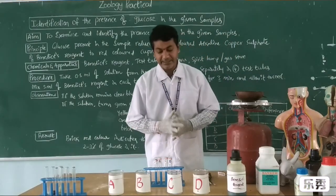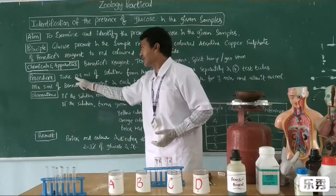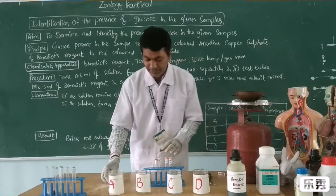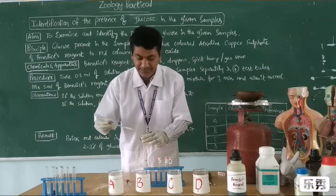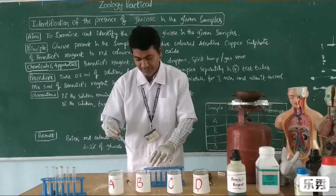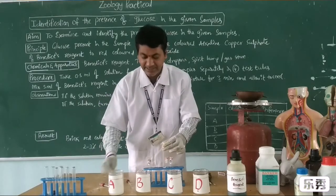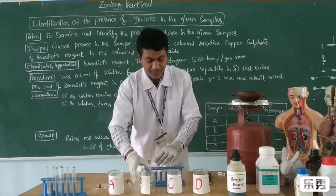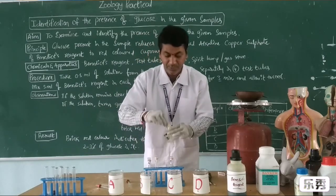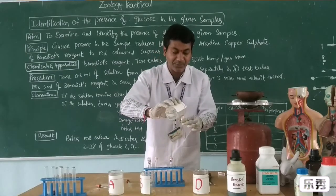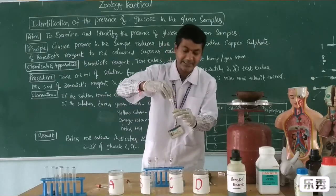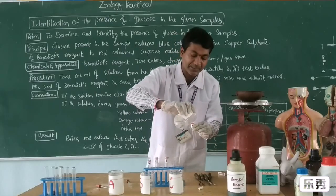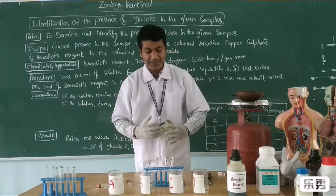Alright, now let us start the procedure. Take 0.5 ml of solution from the four test tube samples separately into each test tube. I am taking sample A into test tube A. Now sample B. I am taking directly instead of using droppers as it will save time. Meanwhile, I have started the stove so the water is heating and boiling. Taking test tube C and test tube D, I have drained all four samples into their respective test tubes separately.